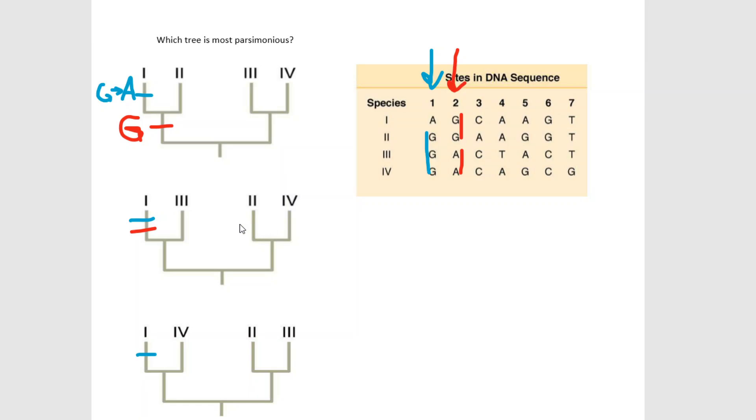And so since we just decided randomly that A could be our ancestral state, just for now, we can map that G over there. So same deal here, we have 1 with 4. They have different letters at site 2. So that means that they're going to have to have a change between them. And 2 and 3 over here also have different letters at site 2. So we're going to put a little tag for a change there.